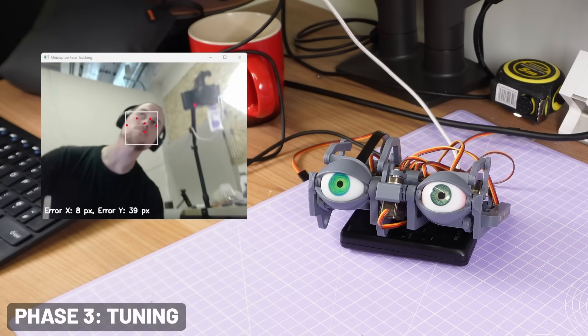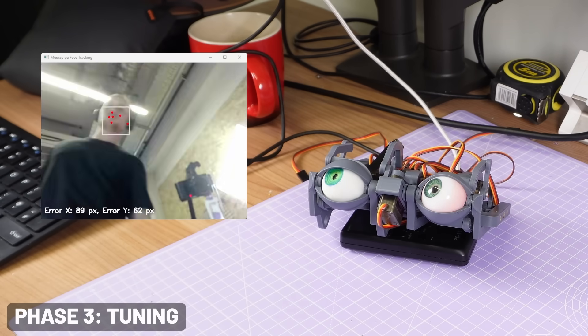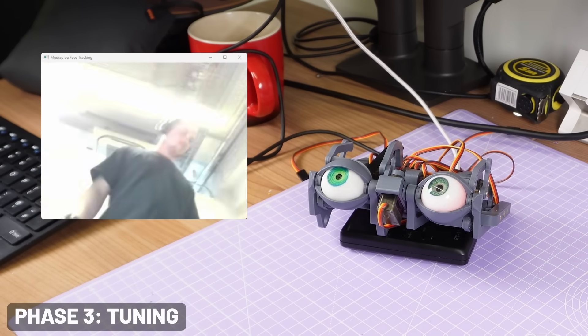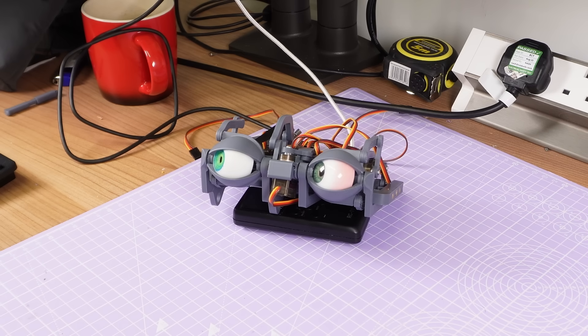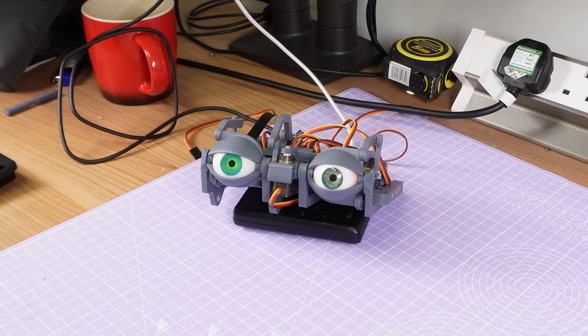The movement started looking a lot better, but it would occasionally get stuck oscillating between two points as it tried to find me. The fix here was to add some smoothing. So if there was a big error, it could make a big jump in position, but if the error was only small, it can only make small movements, preventing it from overshooting and darting back and forth.